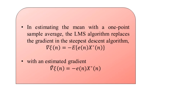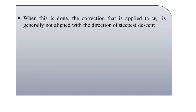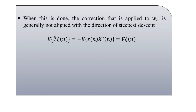When this is accomplished, the correction applied to w(n) is generally not aligned with the direction of the steepest descent. However, since we have the gradient estimate to be unbiased, we denote E[∇̂ζ(n)] equal to minus the estimate of e(n) with the complex conjugate of x(n), equal to ∇ζ(n). So on average, the correction applied is in the direction of the steepest descent.